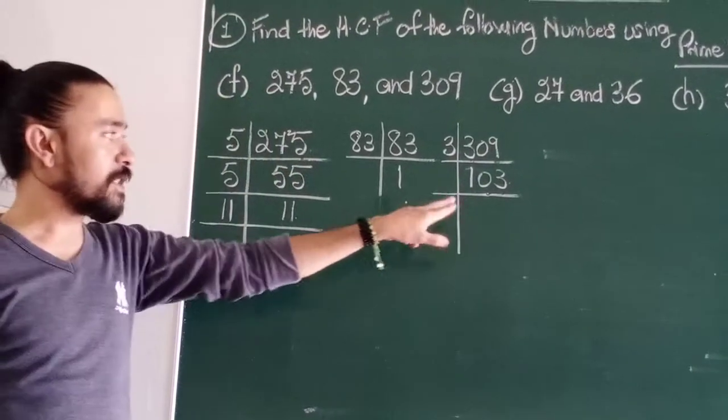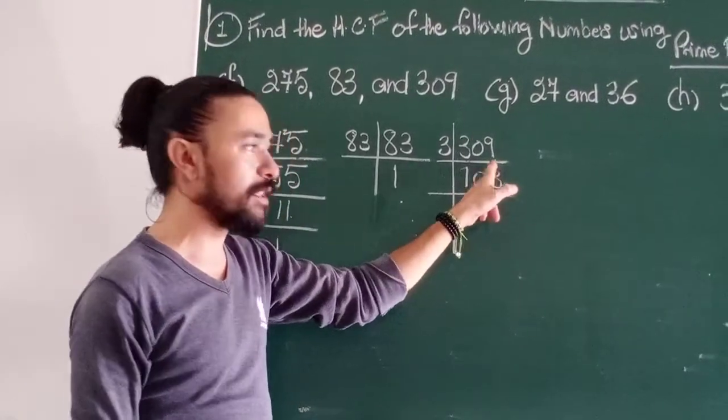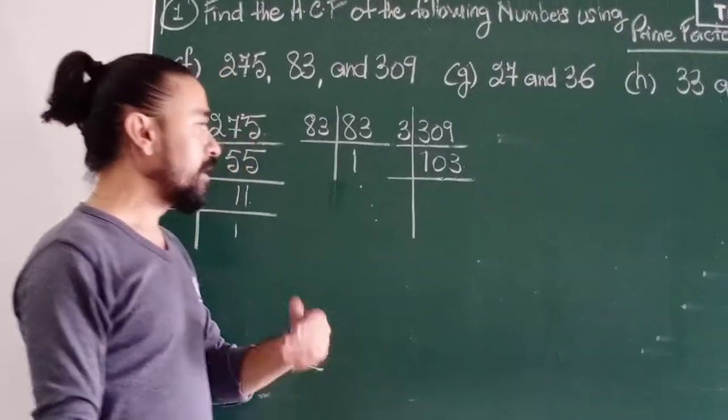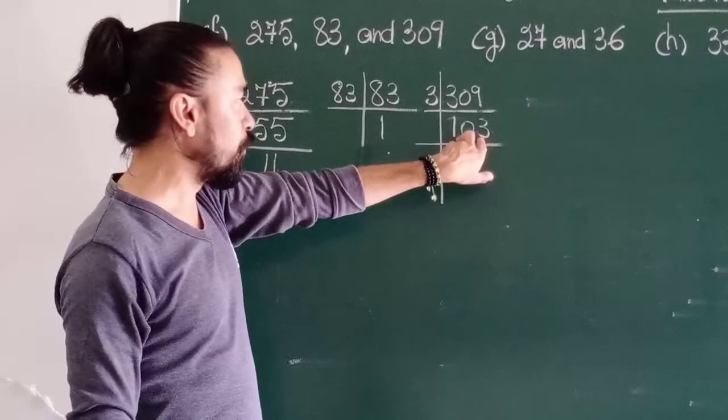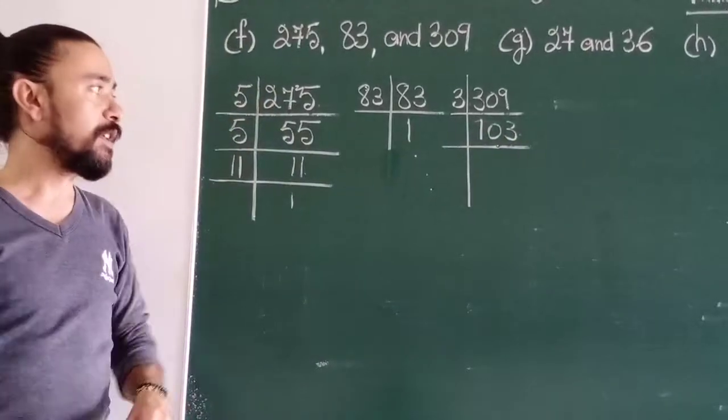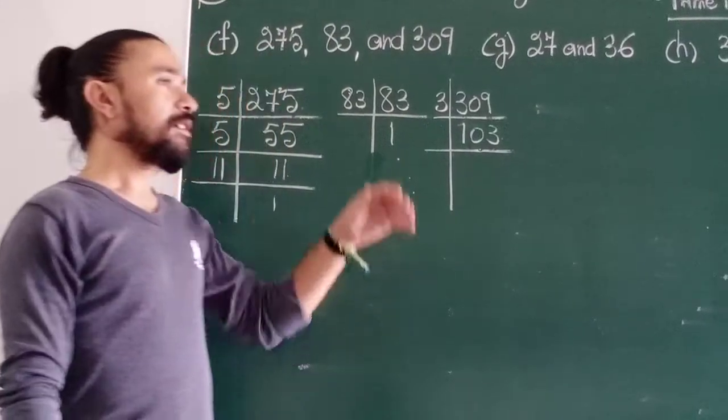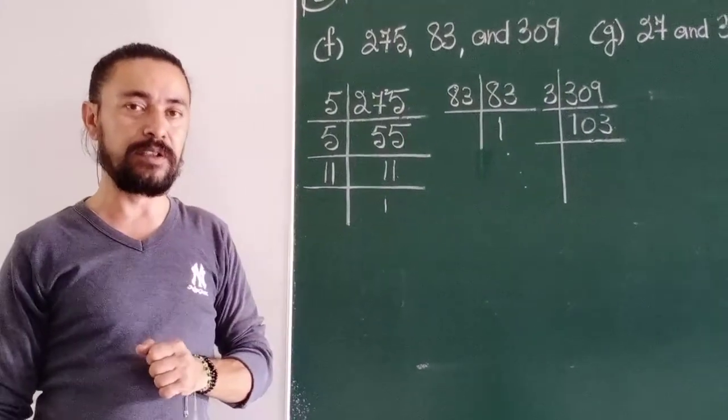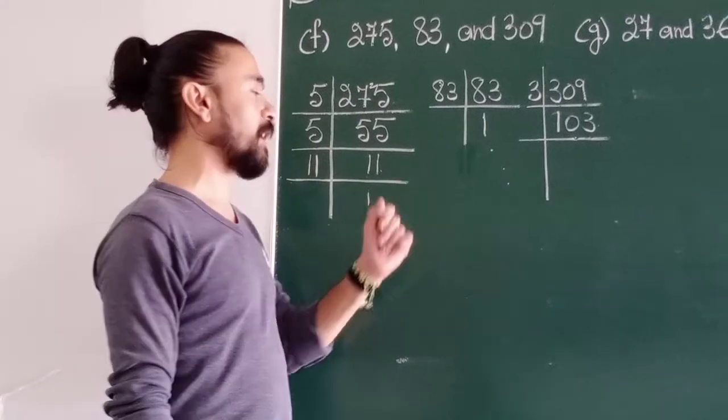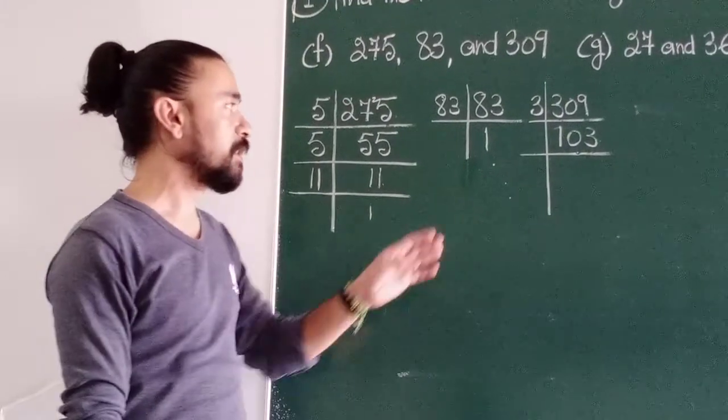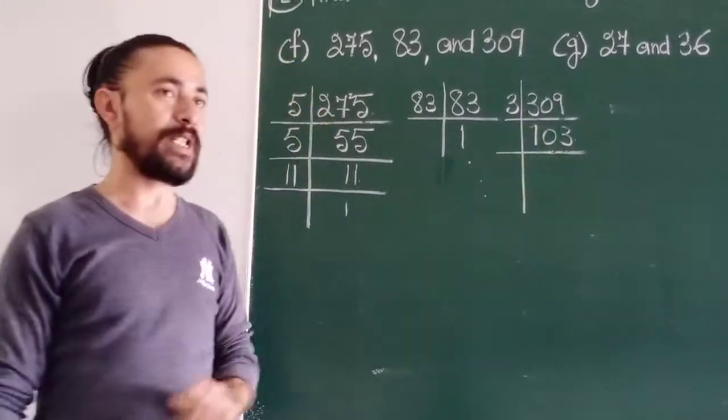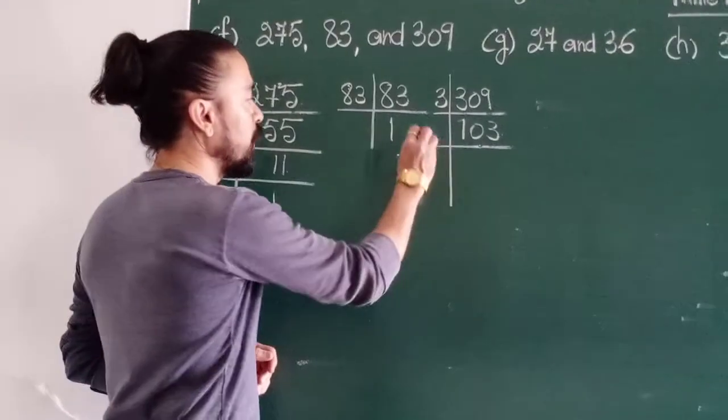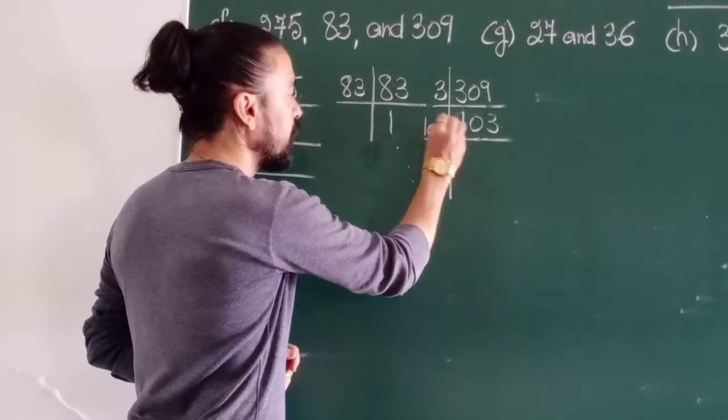By 5, no. By 7, 7 sevens are 7, remainder 3, 33. 7 won't go into 103. Next prime number, 11. 1 and 3, 4, 4 minus 0, 4, no. So eventually, you won't get such sums where you will get confused to find out the prime numbers or the prime factorization. I will give you easier sums that will not involve such big numbers. Actually, 103 happens to be a prime number. So only 103 will divide 103.